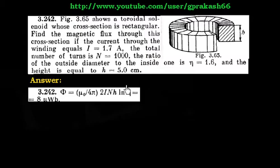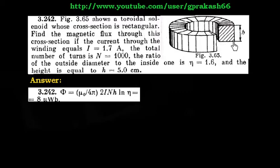Now let us discuss this problem. Figure 3.65 shows a toroidal solenoid. This figure shows a toroid whose cross section is rectangular in nature — not circular. So we have discussed in class a toroid with a circular cross section, but this time the toroid has a rectangular cross section.